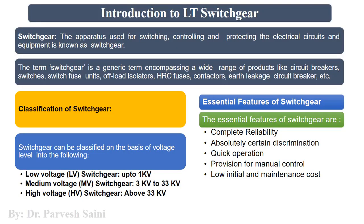A switchgear is basically a device or apparatus which is used to protect the low voltage circuitry from a high voltage circuit, or to disconnect the two circuits — a high voltage circuit and a low voltage circuit — when there is any kind of surge, transient, overcurrent, or overvoltage in the main supply. Along with protection, switchgear is also used for controlling; it acts in a controlled manner.